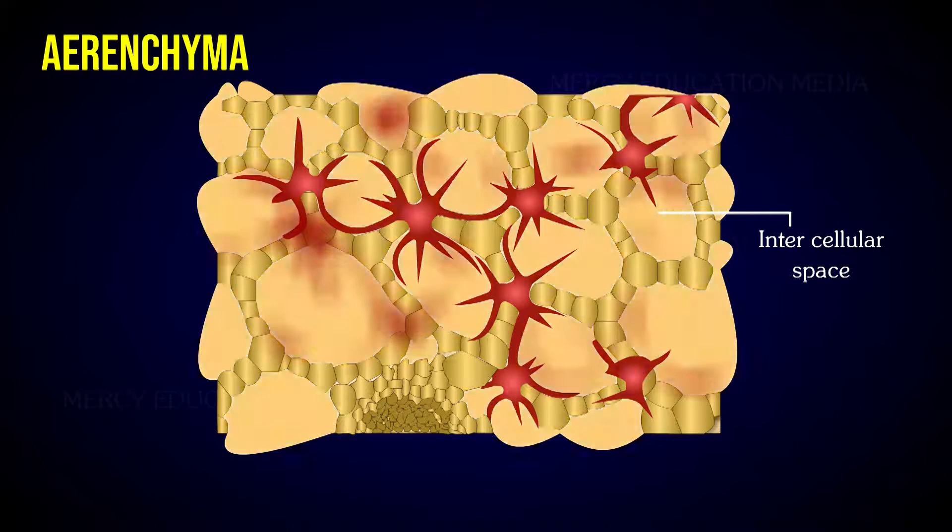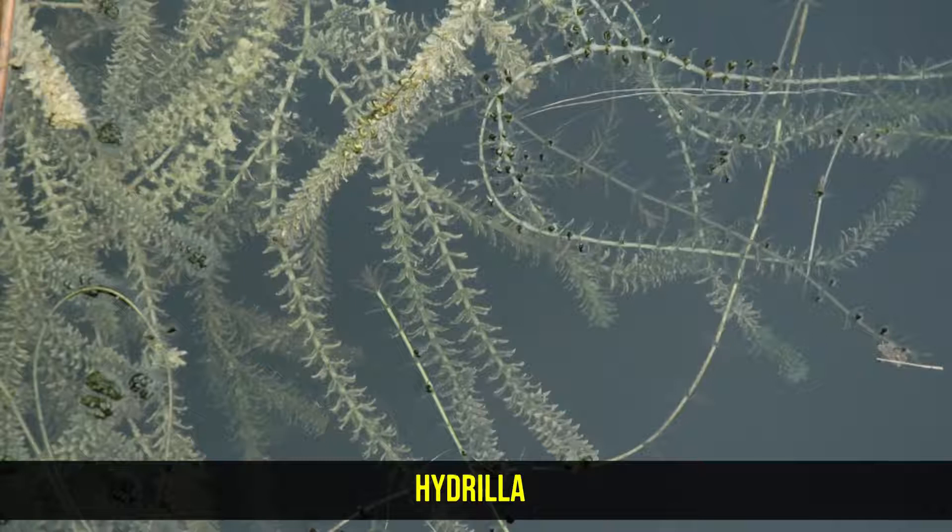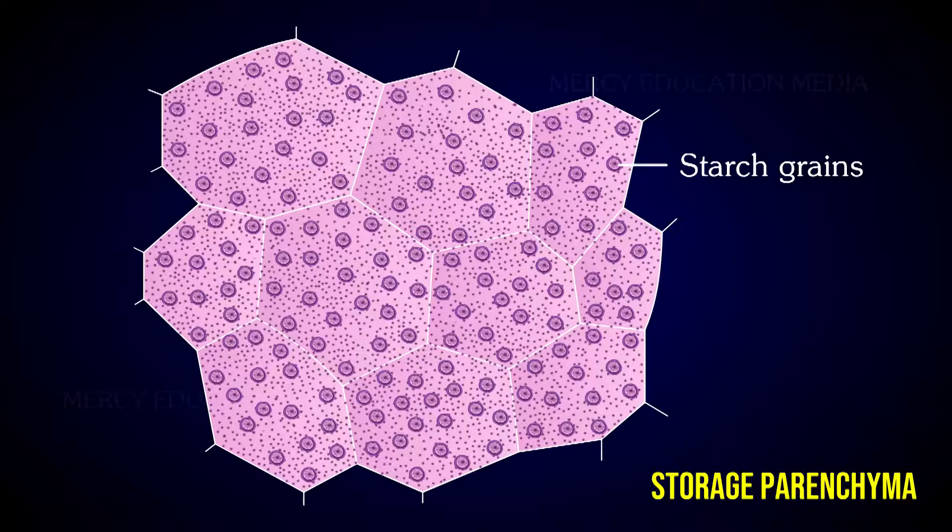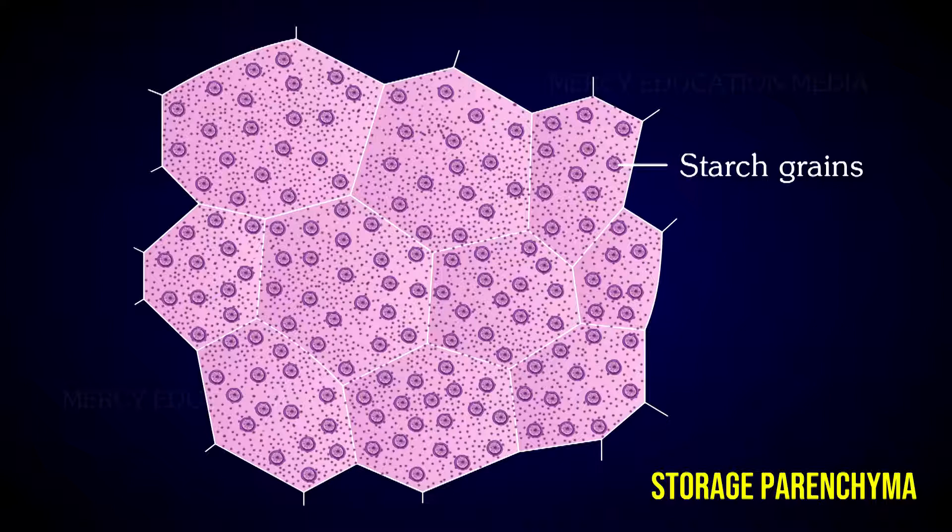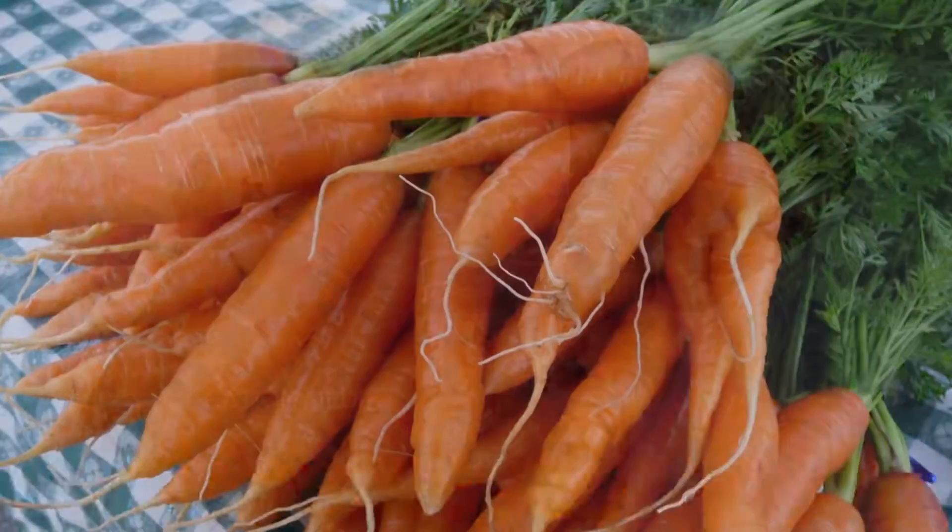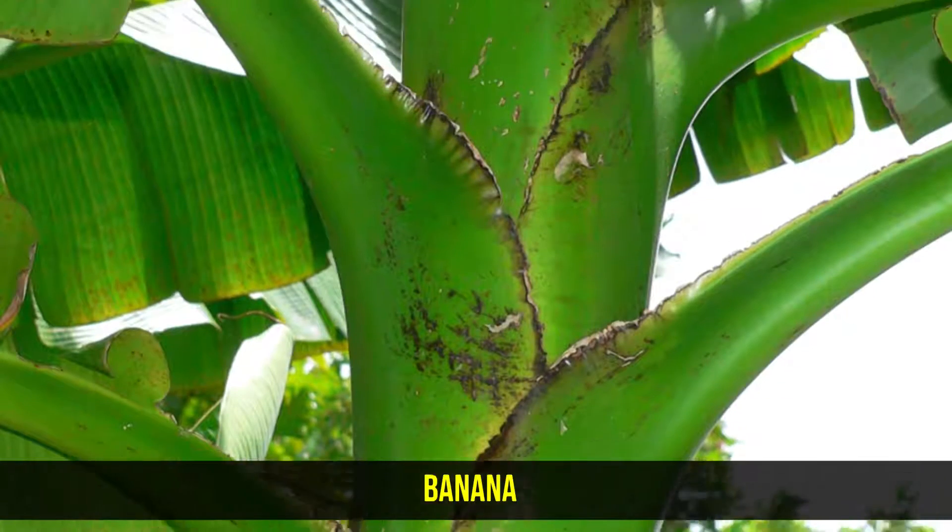The parenchyma cells that are stored with starch grains are called storage parenchyma. Examples: stem and root tubers. In the petioles of banana and canna, star-shaped parenchyma cells are found.